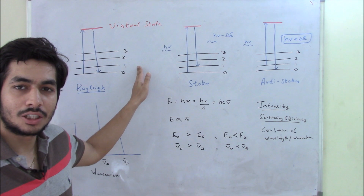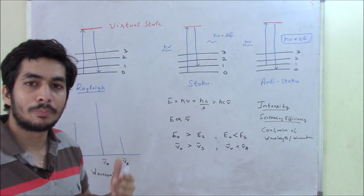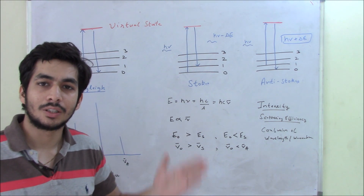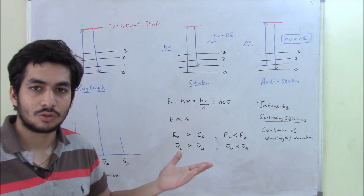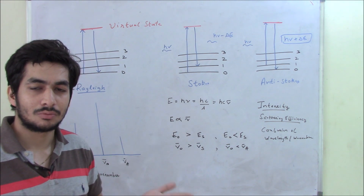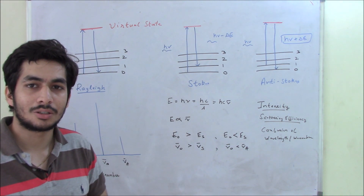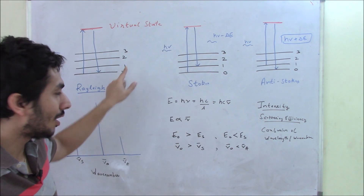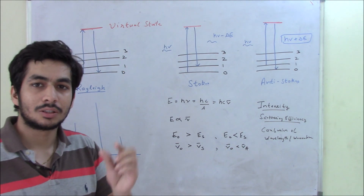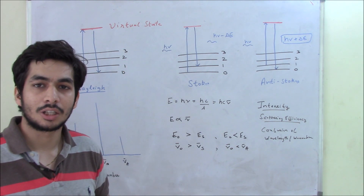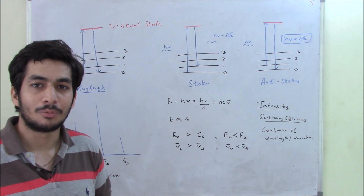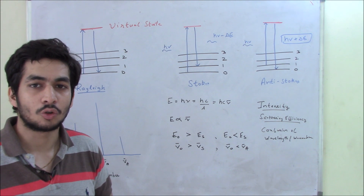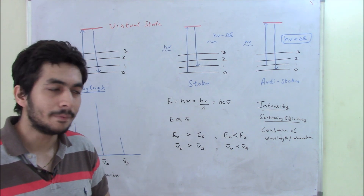If these are rotational energy levels, it's called pure rotational Raman Spectroscopy. If these are vibrational energy levels, it's called pure vibrational Raman Spectroscopy. If there's a mixture of both vibrational and rotational — because in between two vibrational energy levels there are many rotational energy levels — then it's called vibro-rotational Raman Spectroscopy.